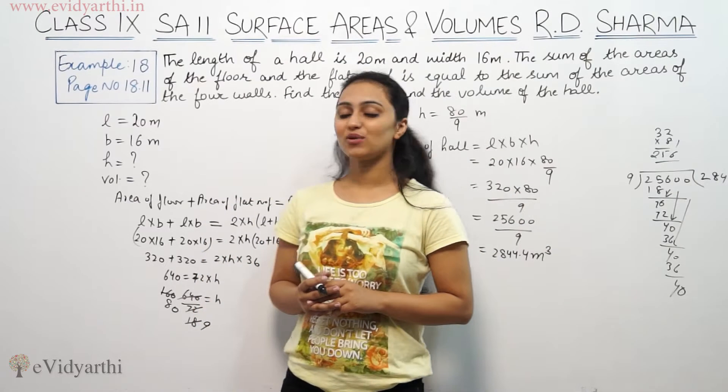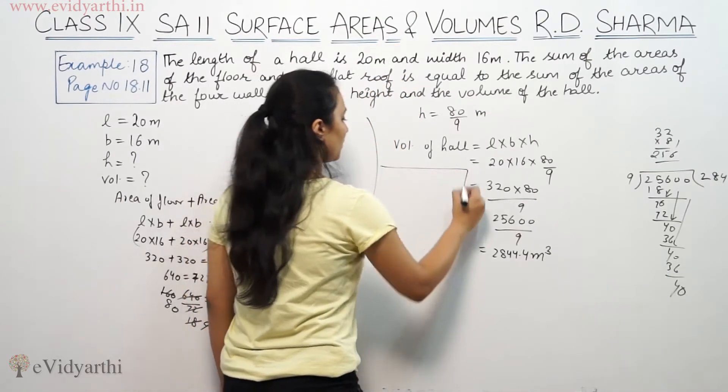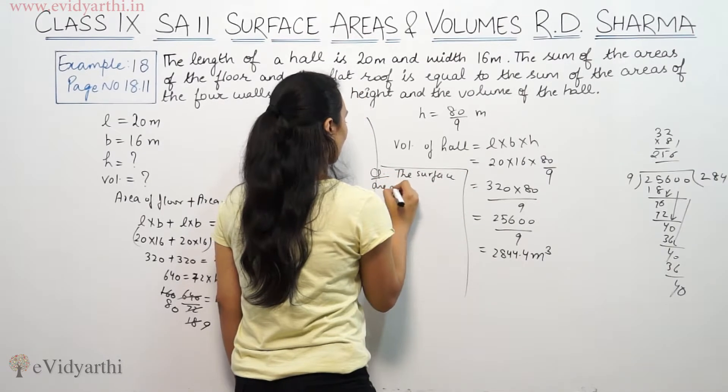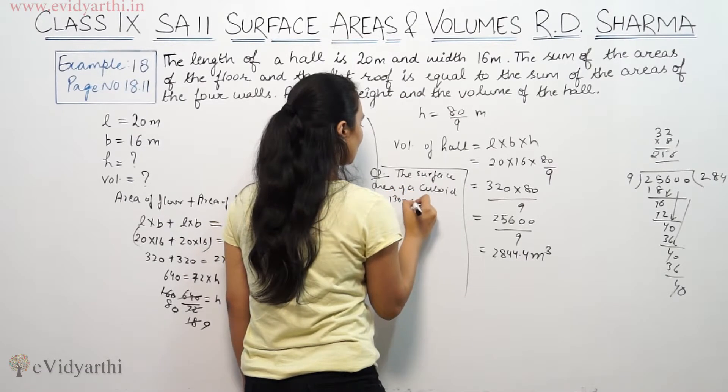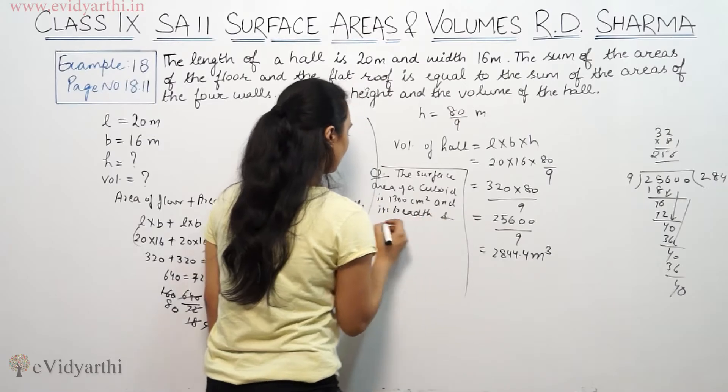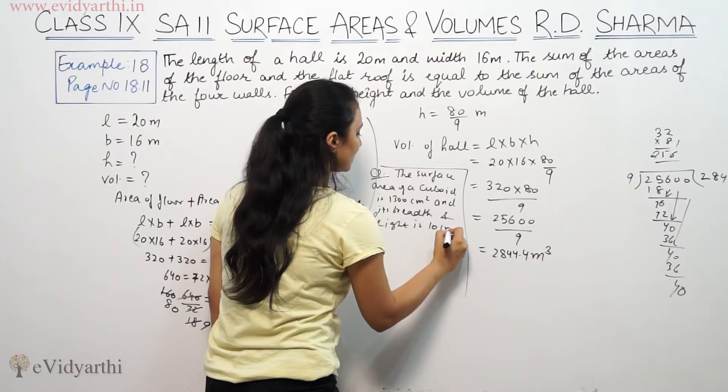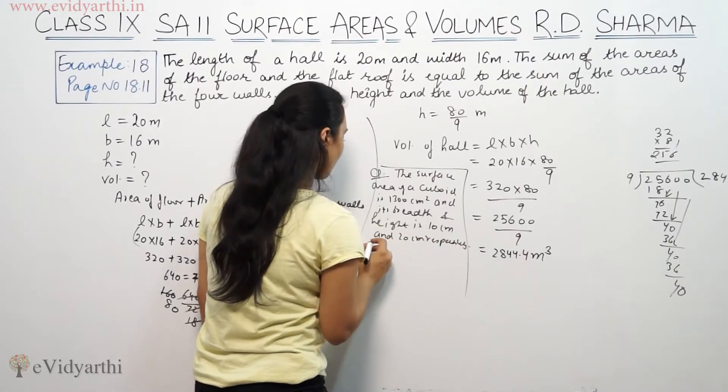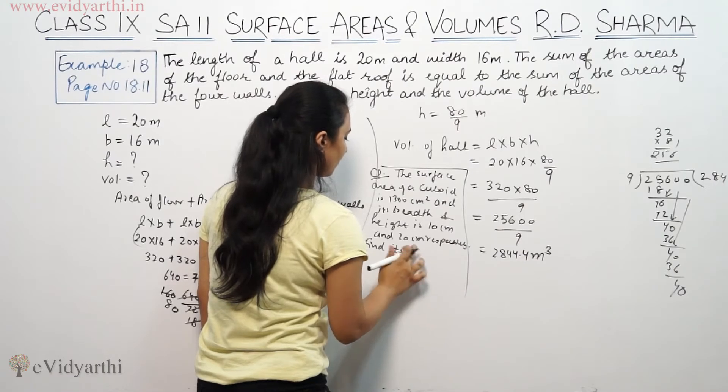So, this is example 18 from RD Sharma. And now, it's my turn to give you a question. The question is: The surface area of a cuboid is 1300 cm² and its breadth and height are 10 cm and 20 cm respectively. Find its length.